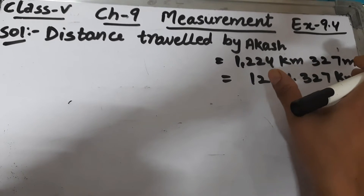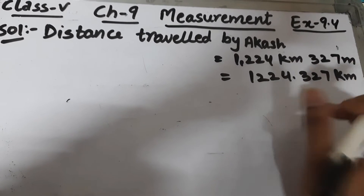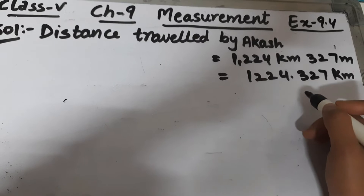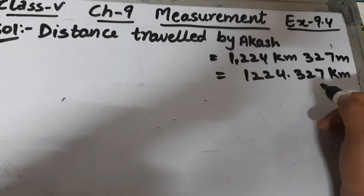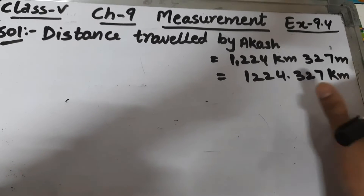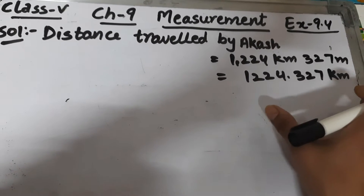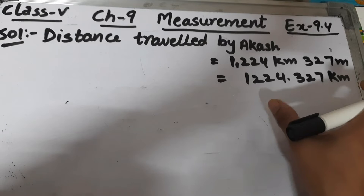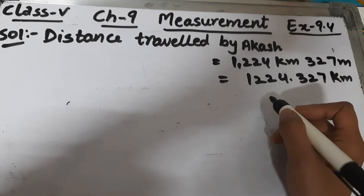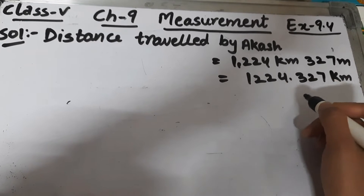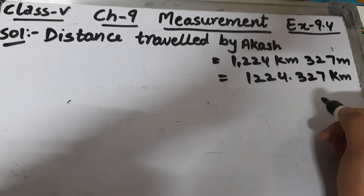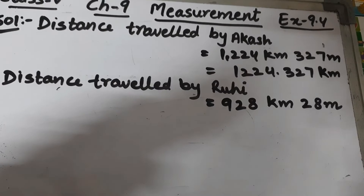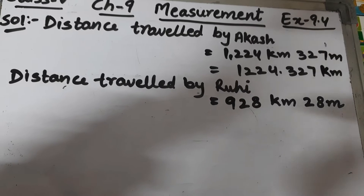Let's start the solution. The distance traveled by Akash is 1224 kilometers 327 meters. First, we will convert it into kilometers — this will become 1224.327 kilometers. So the distance traveled by Akash is 1224.327 kilometers.